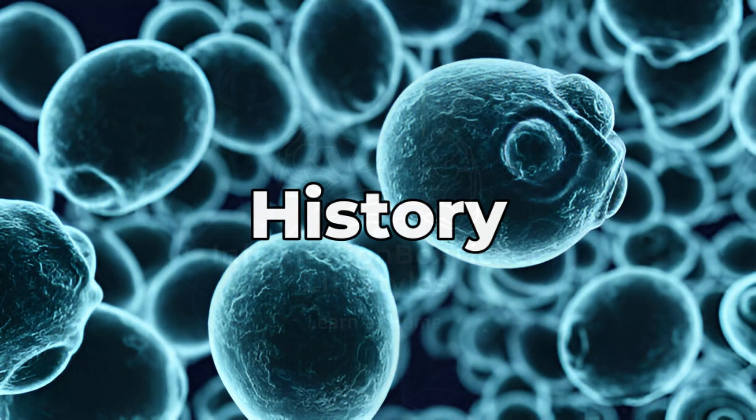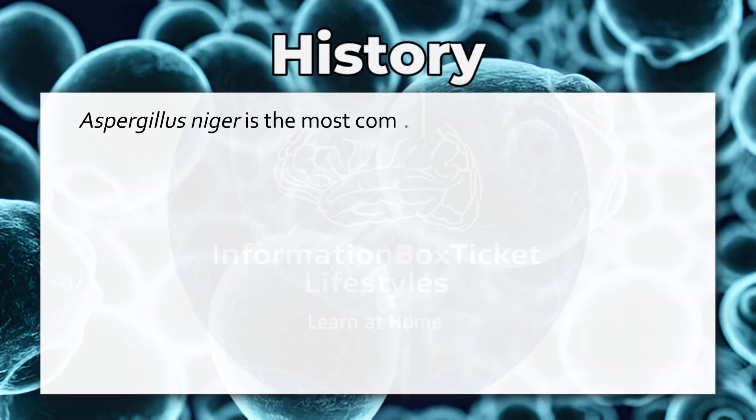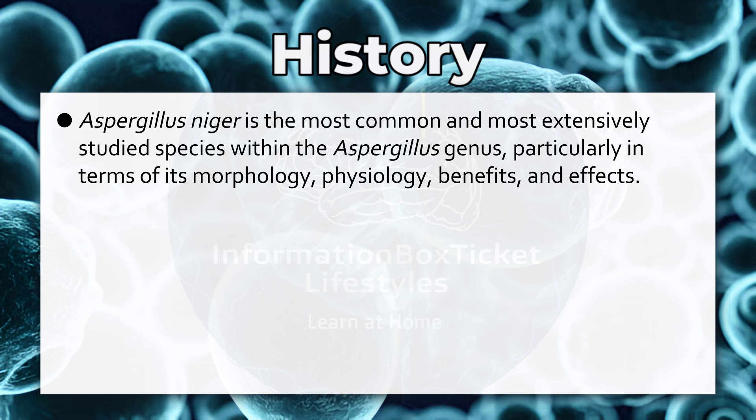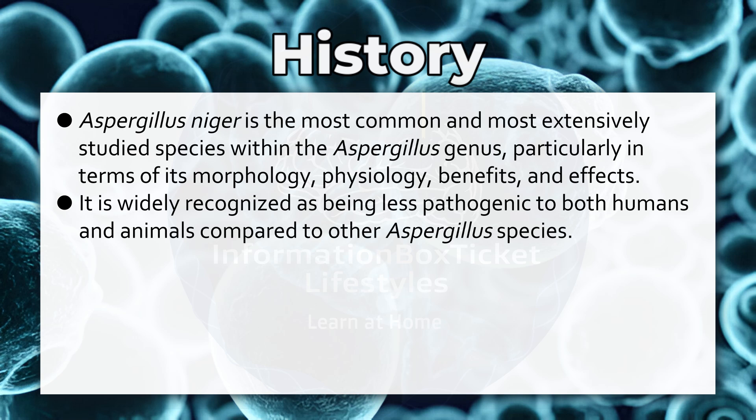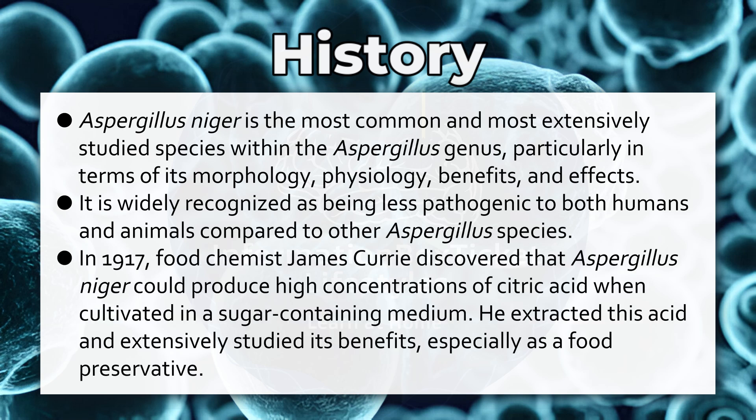History of Aspergillus niger. Aspergillus niger is the most common and most extensively studied species within the Aspergillus genus, particularly in terms of its morphology, physiology, benefits, and effects. It is widely recognized as being less pathogenic to both humans and animals compared to other Aspergillus species. In 1917, food chemist James Curry discovered that Aspergillus niger could produce high concentrations of citric acid when cultivated in a sugar-containing medium, and he extensively studied its benefits especially as a food preservative.